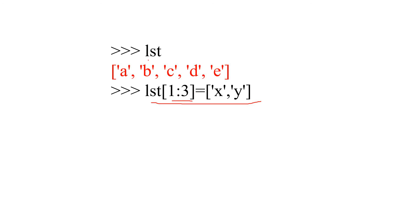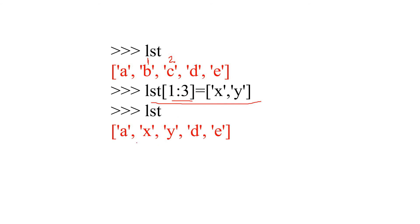We can also go to index 3, where 3 minus 1 gives index 2 as the stop. We are going to change the content of list[1] and list[2] to x and y. So after this change, if you print, you will get A, X, Y, D, E — instead of B and C you are getting X and Y, because you changed them through the slicing operator modification.